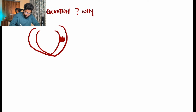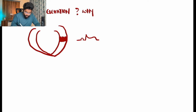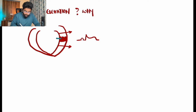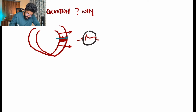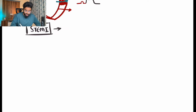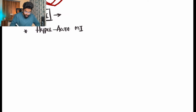The reason for ST elevation: when there is transmural or complete damage of the ventricular myocardium, the depolarization wave moving from the endocardium encounters damage in the myocardium. The current finds it very difficult to pass through, which is why there is ST elevation — the changes we see in an MI patient.